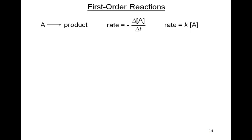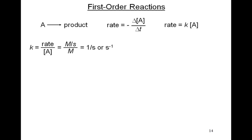The rate can be expressed in two ways: it's minus the change in the concentration of A over the change in time, and it can also be expressed as K times the concentration of A. Therefore, K is equal to the rate divided by A. The rate for a first order reaction is measured as moles per liter per second, or molarity per second, and A has the units of molarity.